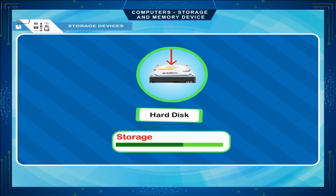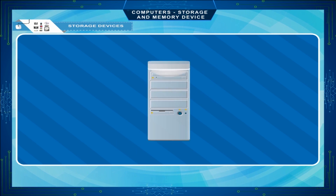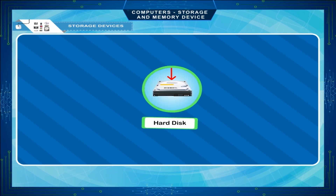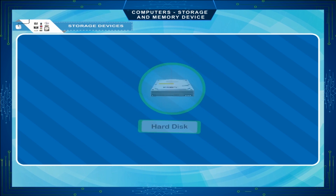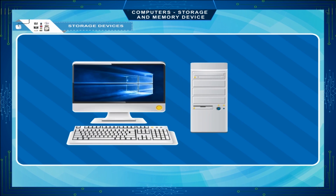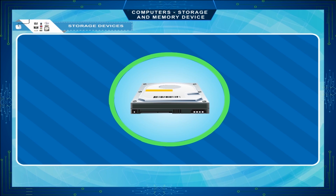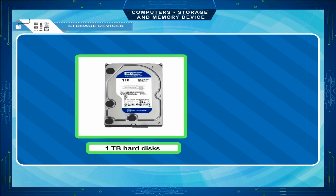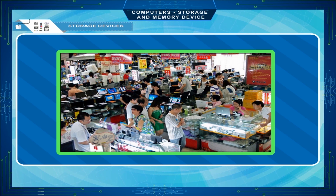A hard disk is a high-capacity storage device fixed inside the computer cabinet that contains all the software and data. The operating system remains on the hard disk and gets loaded into the computer's memory when you switch on the computer. It is an essential part of the computer, made up of multiple disks that can store data on both sides. 1 TB hard disks are commonly used in PCs nowadays. External hard disks are also available to transfer bulk amounts of data.